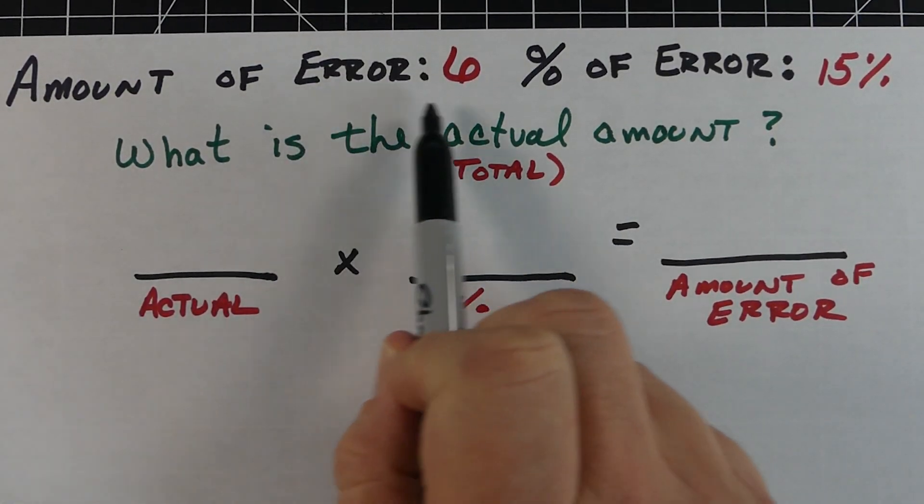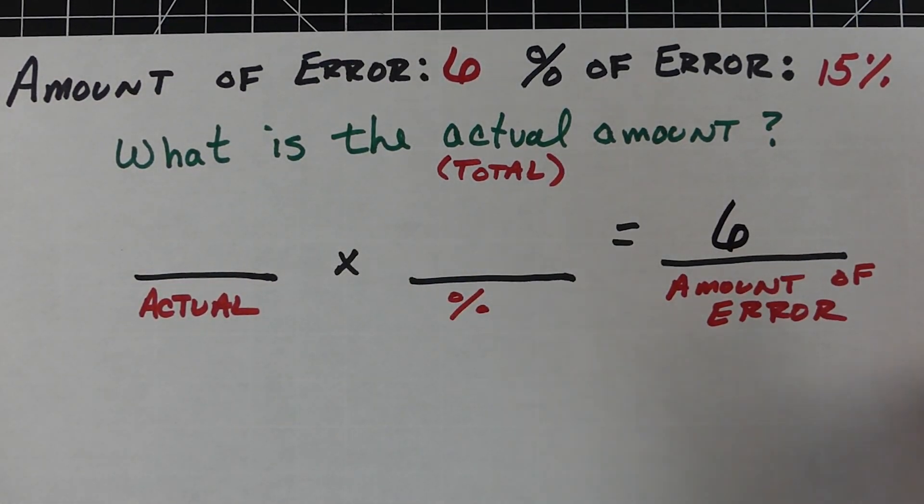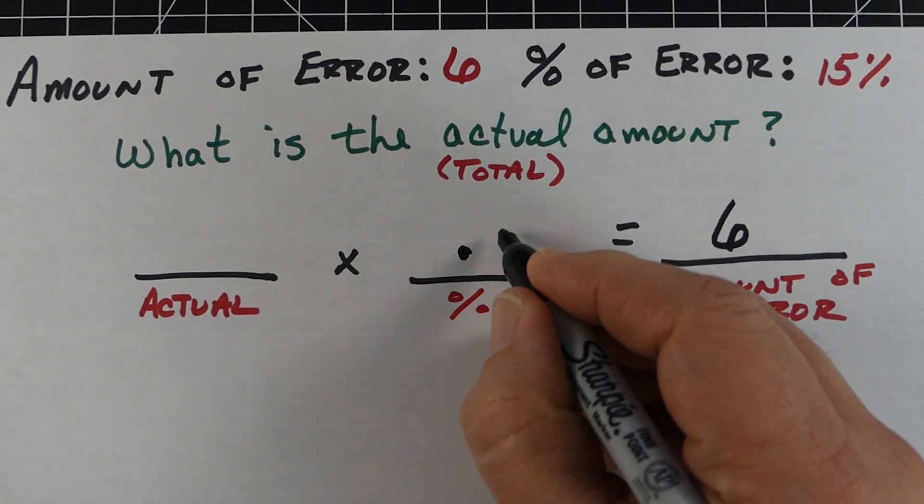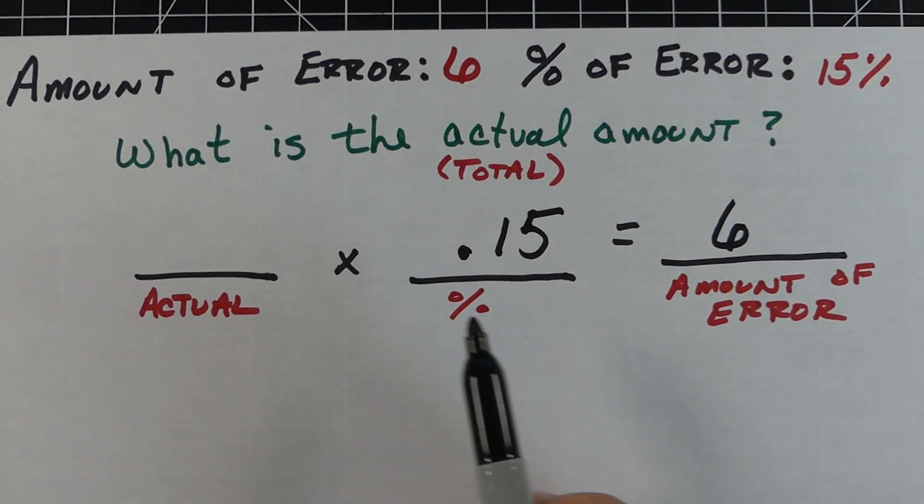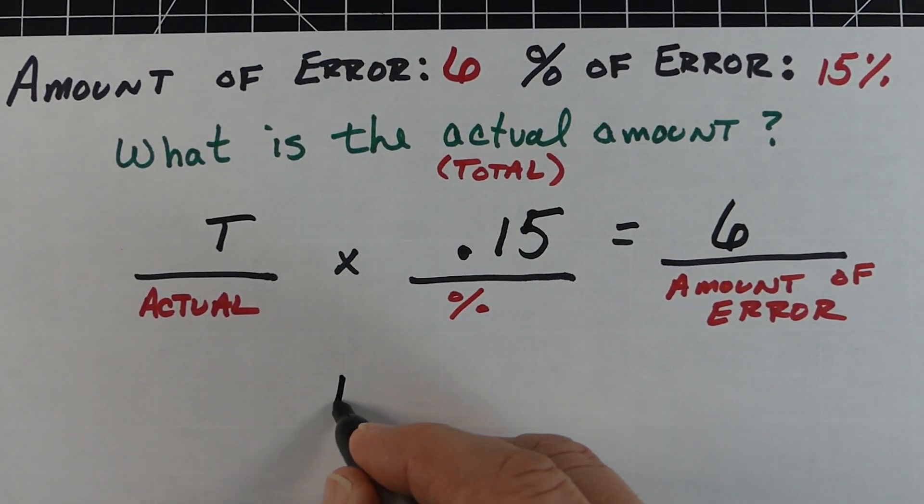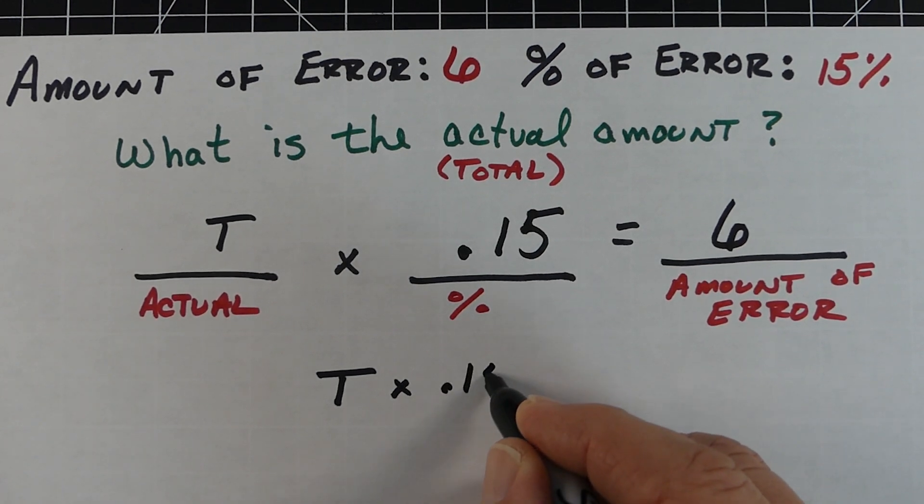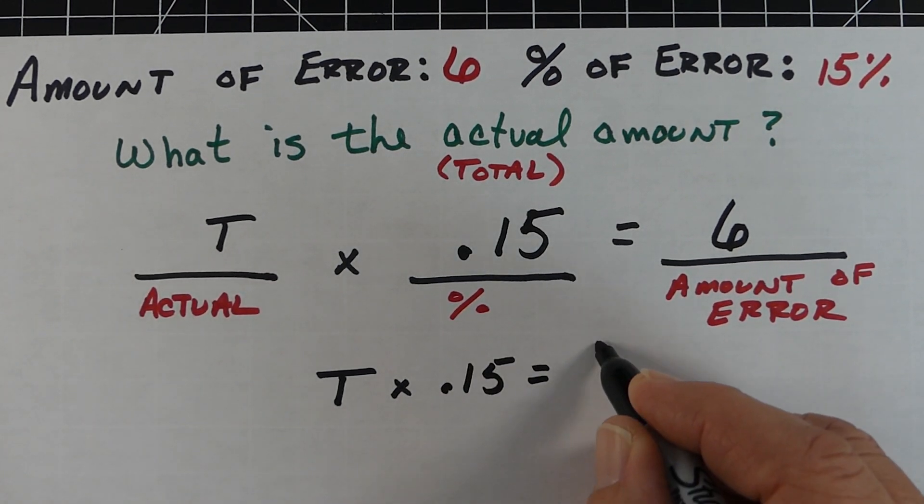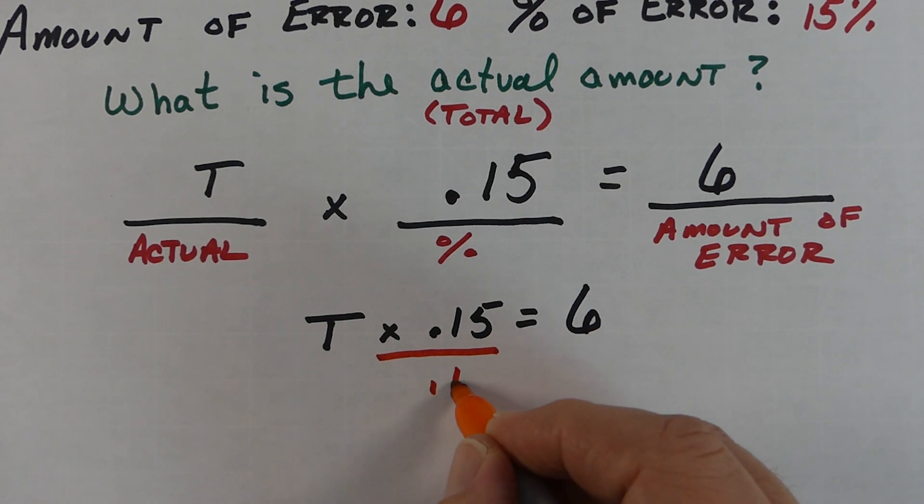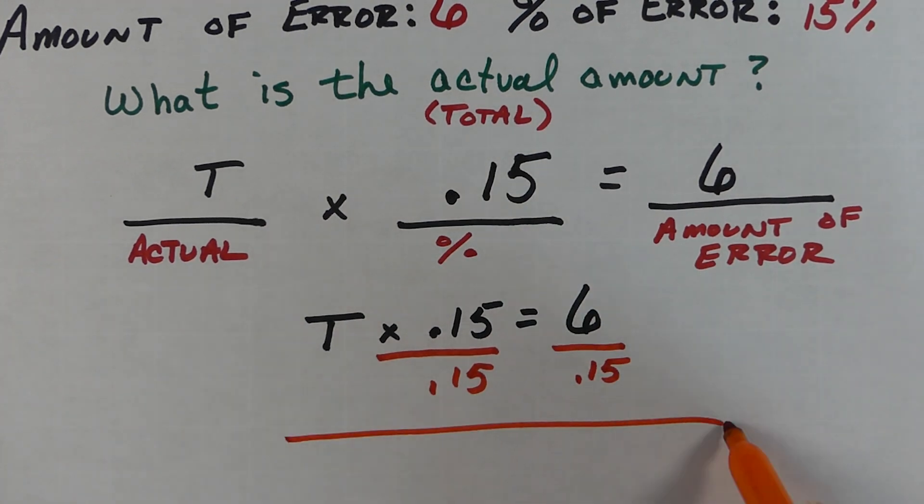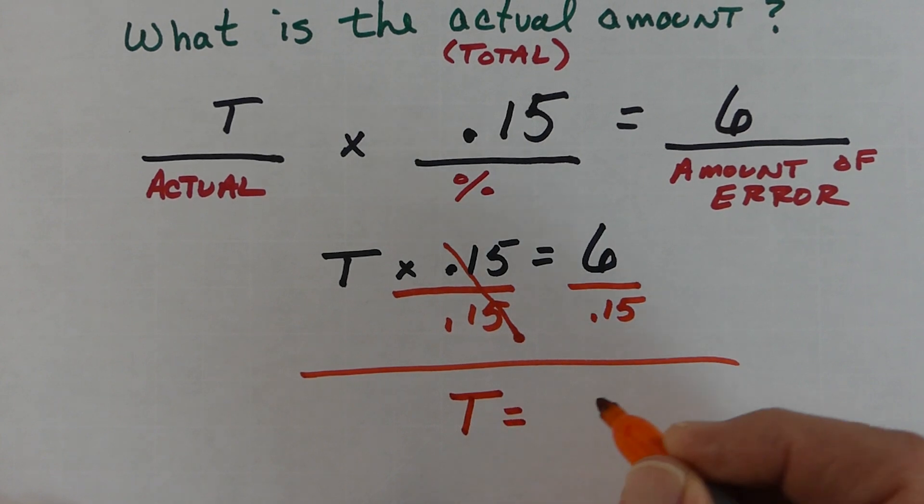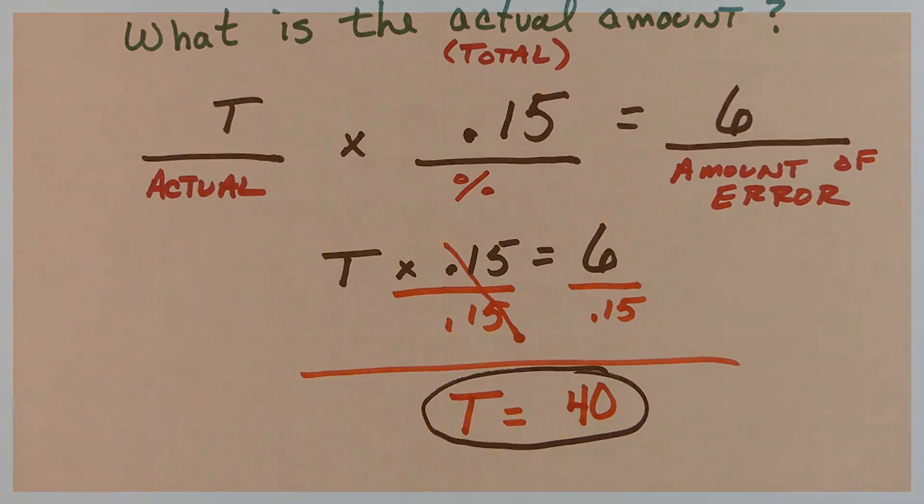The last one like this - we know the amount of error was 6 and the percent of error was 15%, so we'll put 0.15. Again, a one-step equation. We'll use T for the actual, like for total. So we have total times 0.15 equals 6. Divide both sides by 0.15, doing the reverse. On the left just T. On the right, 6 divided by 0.15 gives us 40.